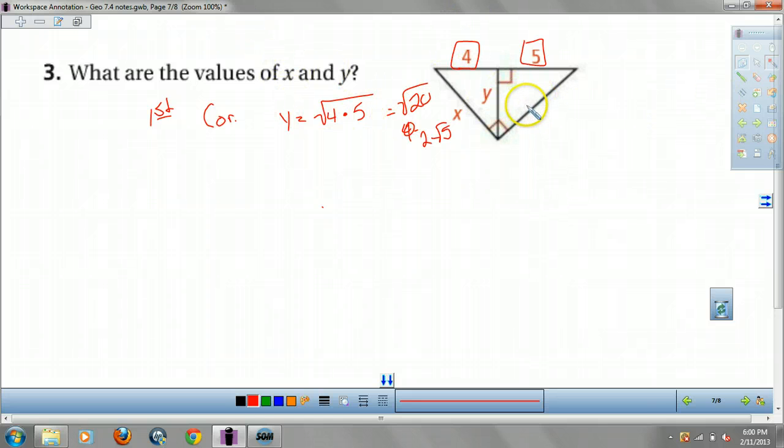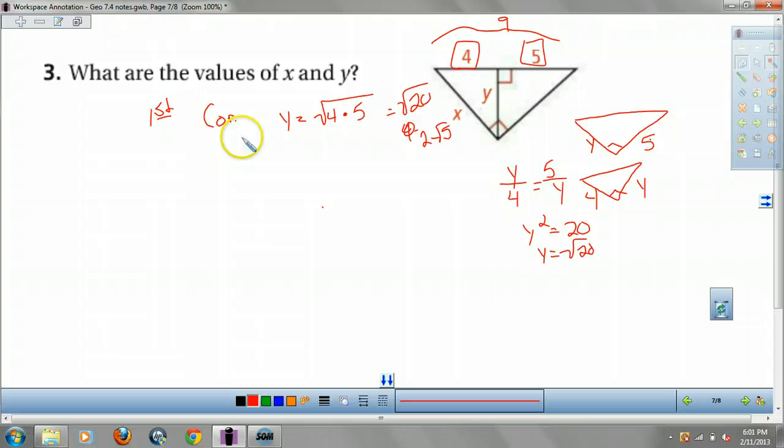So, the other way you could have done this, if you don't see that right away, like I said, redraw your triangles, guys. We have a medium triangle, we have a smaller triangle. Our large triangle, this is 9, this is X. Our medium triangle should be this guy right here. The way I drew it, we have a Y and a 5. And our small triangle would be a Y and a 4. So, to find Y, what you do is you set up Y over 4 equals 5 over Y. Y over 4. And you get the same answer. Look at it. You get Y squared equals 20. So, Y equals square root 20. Either way works, guys. If you don't memorize the corollaries, that's fine.